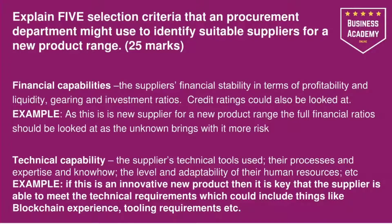So this is your question — let's make it full screen so you can look at it properly. "Explain five selection criteria that a procurement department might use to identify suitable suppliers for a new product range." The command word is 'explain', so it wants you to talk it through, and we need five selection criteria. Don't give them more than that — they will only mark the first five that you put down. You should have five clear paragraphs going through each one. You might want to define something to start in your introduction, such as what selection criteria is, that this is part of the sourcing process, and how and where goods and services are obtained.